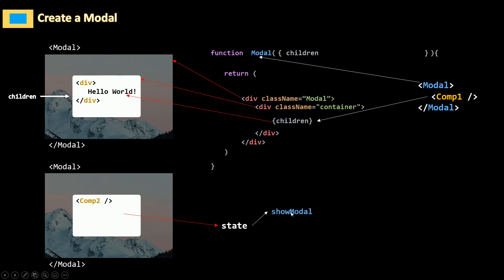We'll have a variable called showModal. When it's set to true we're going to show the modal, and when it's set to false we're going to hide the modal. Whenever we want to change this, I'm going to use a function called setShowModal — setShowModal to false, setShowModal to true.